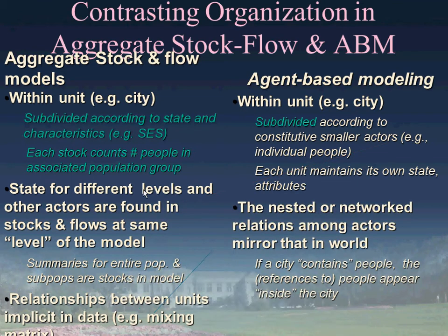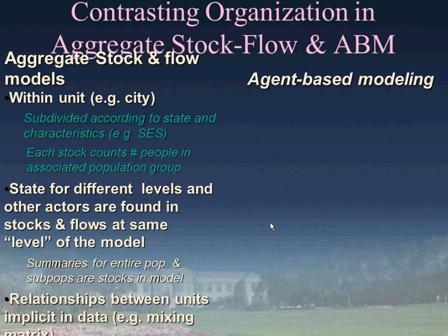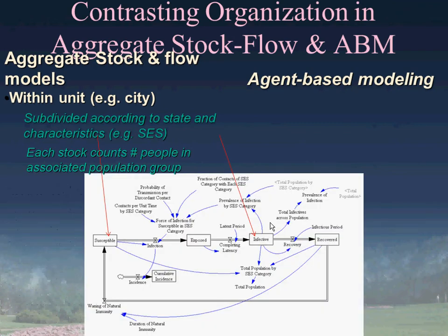In an agent-based model, if we have nesting—say a person within a family, a family within a neighborhood, a neighborhood within a city—we capture that in a nested way. In this workshop, we'll see hierarchical models where we depict people as being in several nested contexts, which is very easy to capture in an agent-based model. By contrast, within a system dynamics model, we can capture nested contexts but we do so in the same basic horizontal way—they're just different variables within the same model.